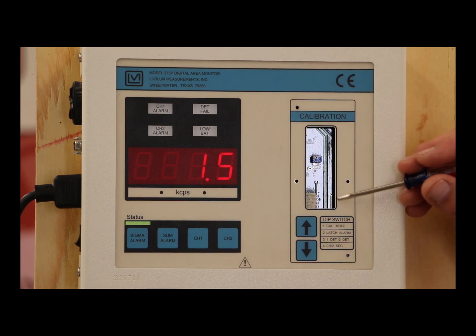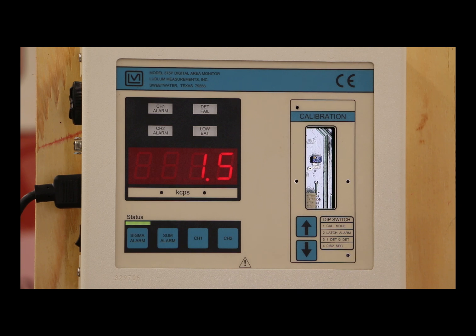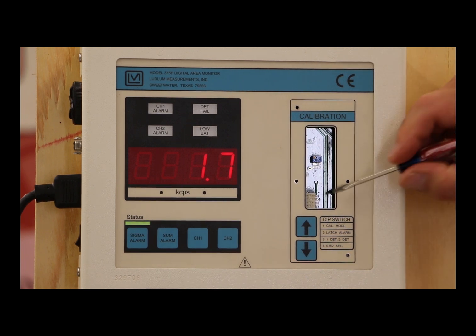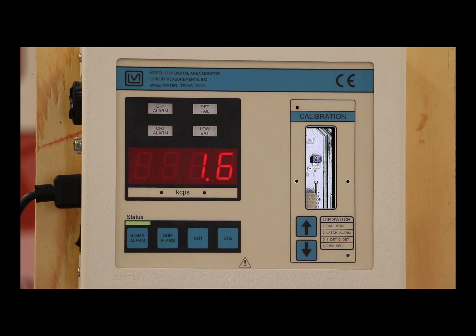We have a few other dip switches here. The second one is latching alarm. What happens when you get an alarm, does it latch? Latch means that it stays on until someone comes and touches one of these buttons and acknowledges it. Currently, as you saw earlier, when we get an alarm and I move the source away, the alarm goes off. It's in the non-latch mode. That's with the dip switch number two all the way to the left. If I moved it to the right, it would alarm until someone came and pushed either the sum button or the sigma button.